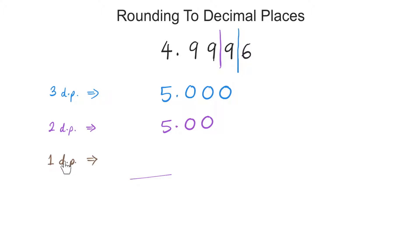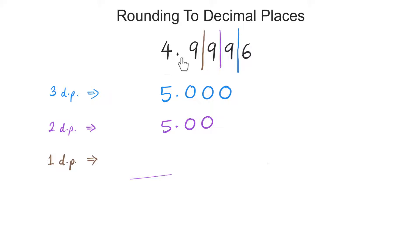Now the last one, to one decimal place. From the decimal point, one decimal place is here, so we need to put the line over there. What comes after the line? It's a 9, so we need to raise the score, we need to round up. Imagine this as a whole number, 49. What comes after 49? It's 50, so this becomes 5.0.